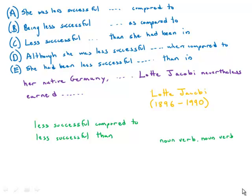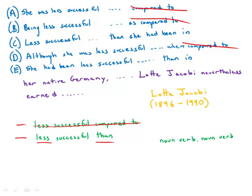In this sentence about the famous philosopher Lotta Jacobi, there's a comparison, and they have two ways of phrasing this comparison: 'less successful compared to' versus 'less successful than.' It turns out that saying 'less successful compared to' is grammatically incorrect — 'less than' is what is grammatically correct. So all the answer choices using 'compared to' are out right away.